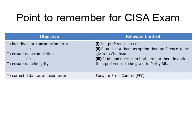Key points to remember for the SISA exam: when the objective is to identify data transmission errors, ensure data completion, or ensure data integrity — first preference is CRC, second preference is checksum, and if neither option is available, the answer should be parity. To correct a data transmission error — note the word 'correct' — your answer should be forward error control.